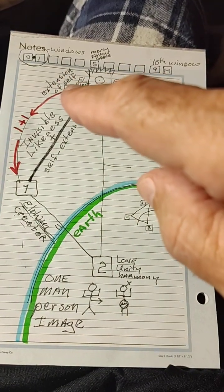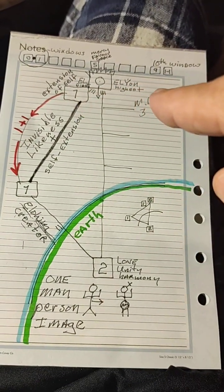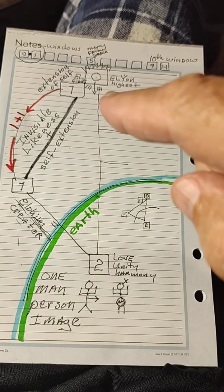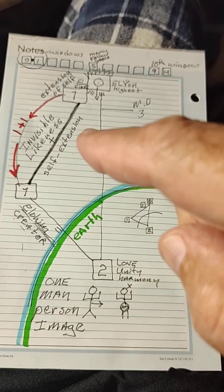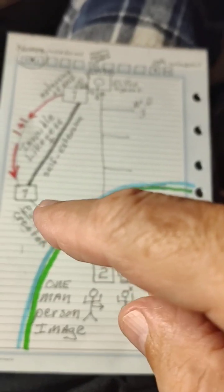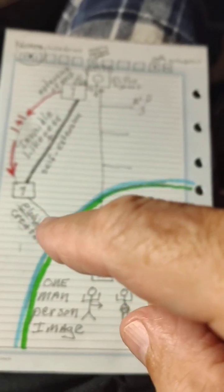There is no time with God. God can look at all time in a giant picture all at once. God, who is one, El first, Elyon highest, the one, invisible likeness, self-extension, is still one in creation.